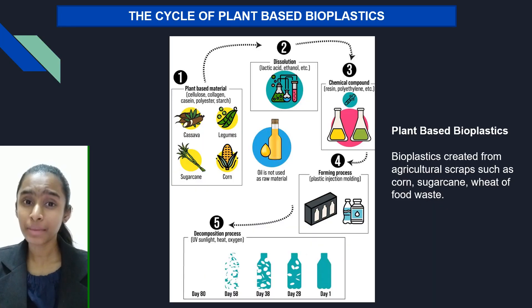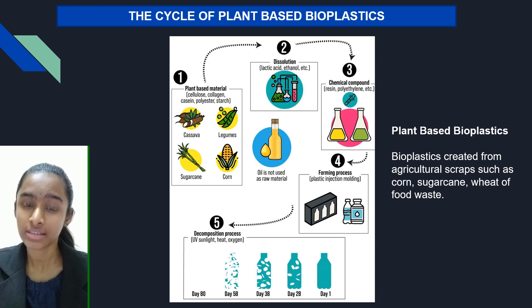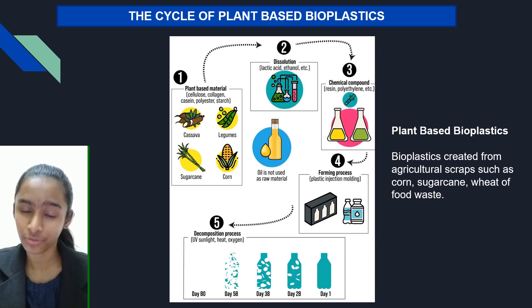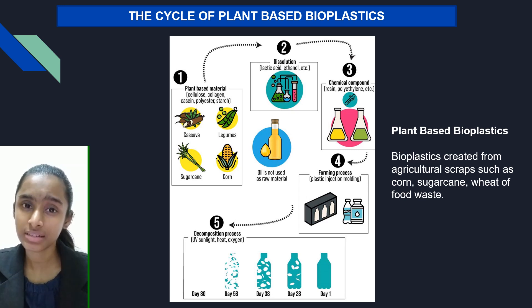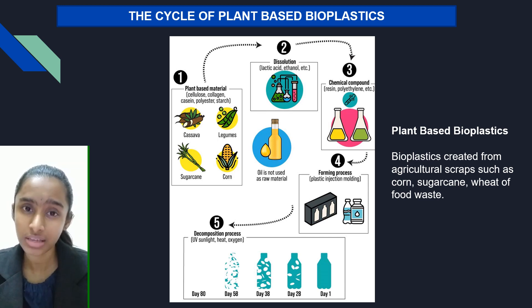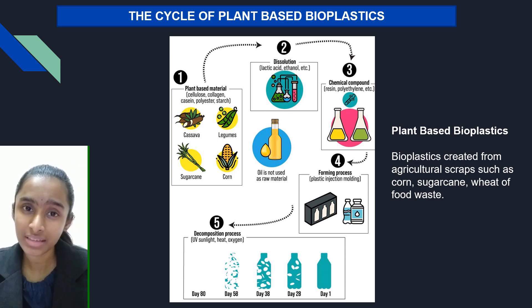Plant-based bioplastics are bioplastics created from agricultural scraps such as corn, sugar cane, wheat, or food waste. Plant-based materials such as cellulose, collagen, casein, polyester, and starch are used to form plant-based bioplastics, which go through a dissolution process and then chemical compounding, followed by a forming process where plastic injection molding takes place.